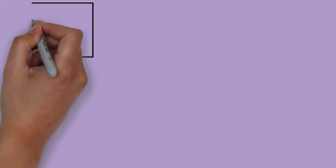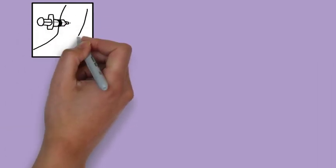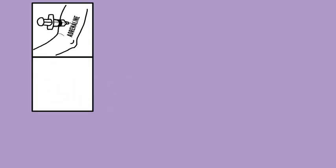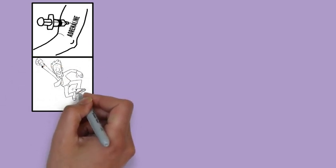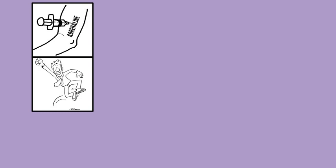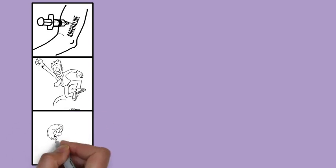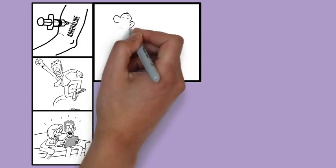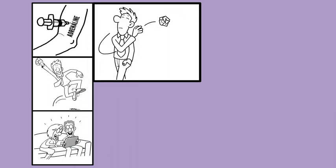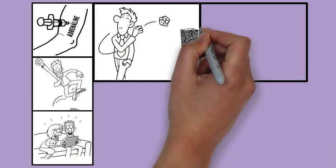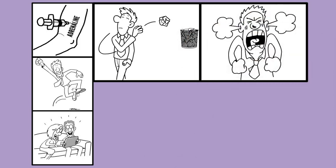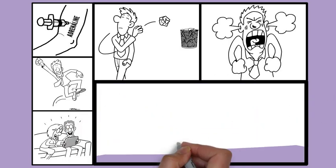To test this theory, Schachter and Singer in 1962 injected subjects with adrenaline. Adrenaline is a drug that produces high arousal. Then these subjects were made to observe the behavior of others, behaving either in a euphoric manner by shooting papers at a waste basket or in an angry manner by stomping out of the room.